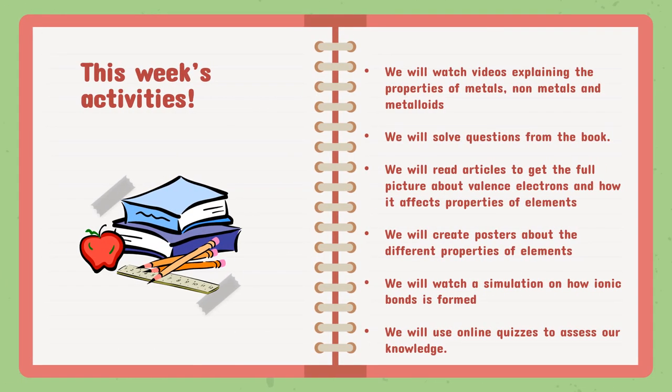For this week's activities, we will watch videos explaining the properties of metals, non-metals, and metalloids — each and every different property according to their valence electrons. We will solve questions from the book to answer questions from the following lesson. And then we will read articles to get the full picture about valence electrons and how they affect the properties of elements. We will also create posters about the different properties of elements.